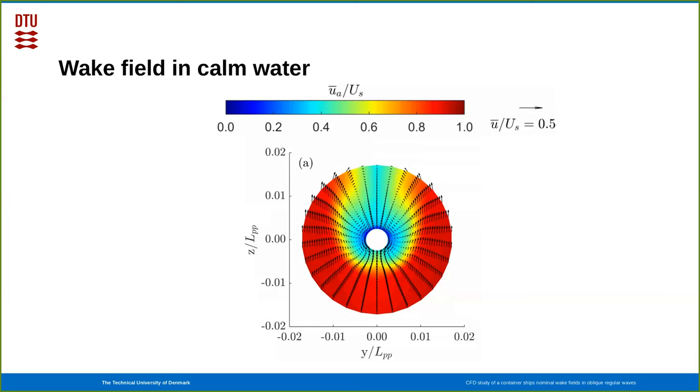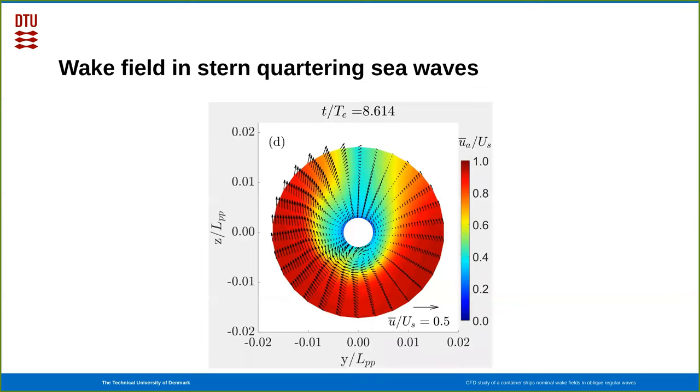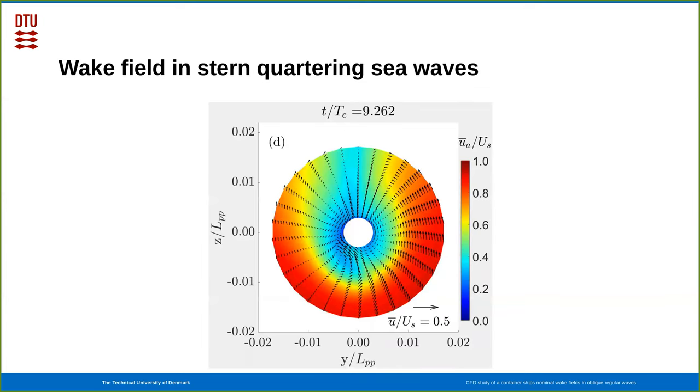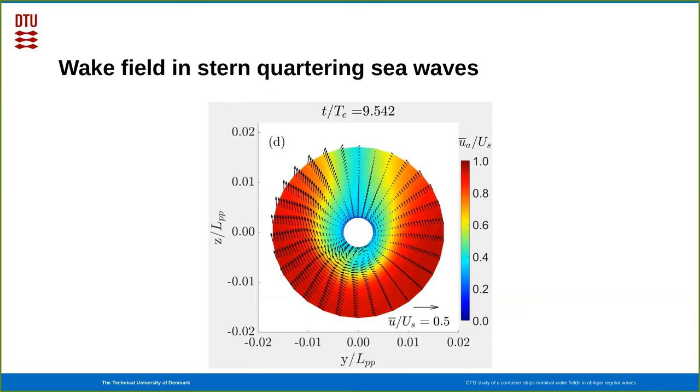With that validation and verification, we can now turn to the study of the physics, and here we first consider the wake field in calm water. You see the axial component, which is color coded. You can see that the hull has produced a boundary layer, and also a secondary flow illustrated with the vectors. You can do the same in stern quartering sea, and then see how the unsteadiness of the waves modify and produce vortices that are perturbing the flow in the wake region.